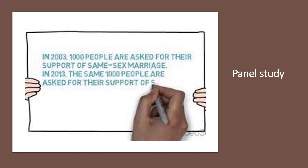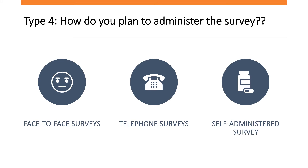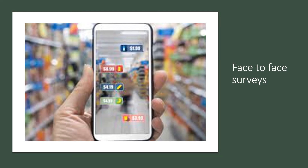So in a trend study you are looking at whether the attitude has changed across groups, while in a panel study you are seeing whether the individuals themselves have changed. The final category is classified by how you plan to administer your survey. Under this, there are face-to-face surveys, telephone surveys, and self-administered surveys.